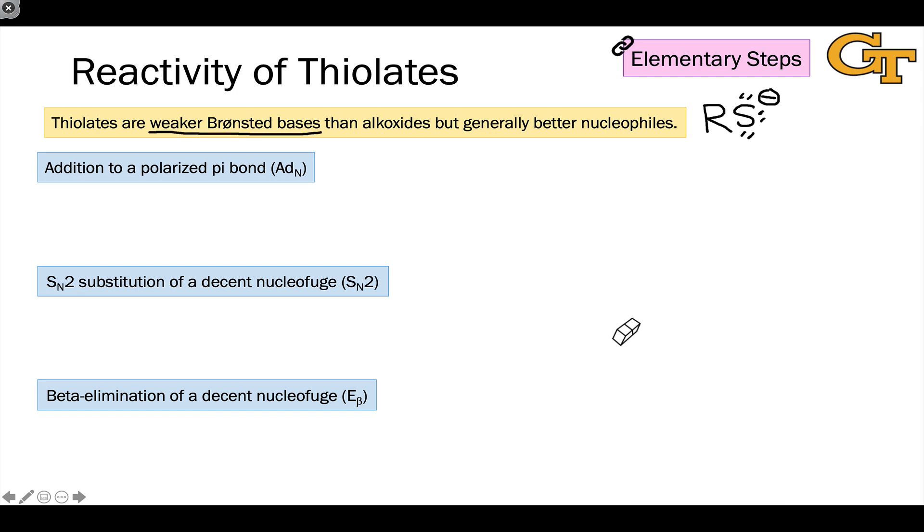However, they tend to be weaker Bronsted bases than alkoxides, but generally better nucleophiles. So we find thiolates acting as nucleophiles in a number of different ways.